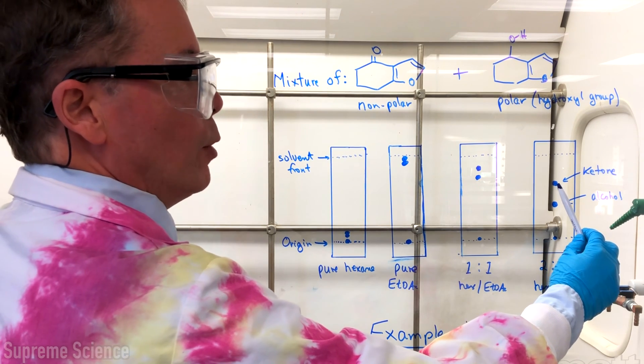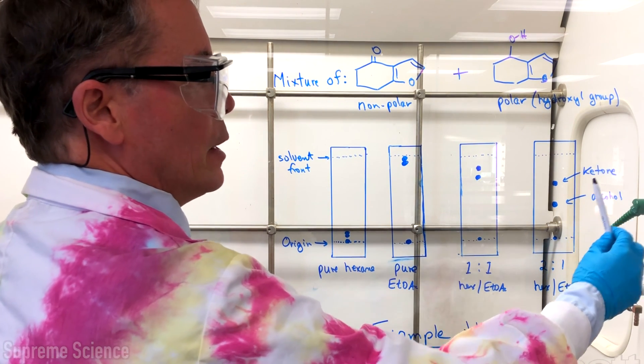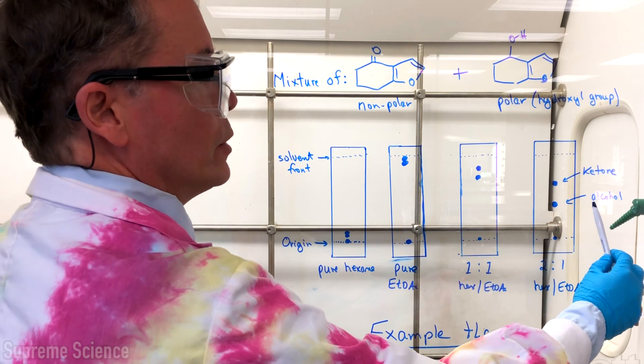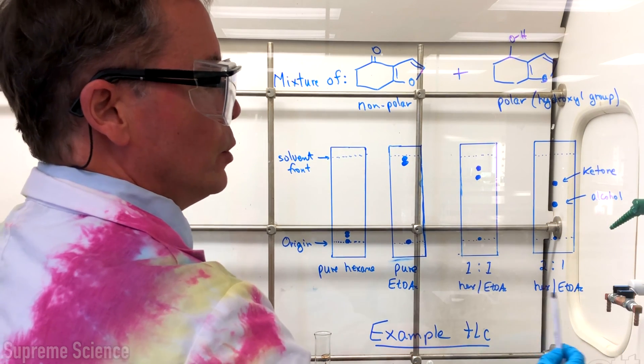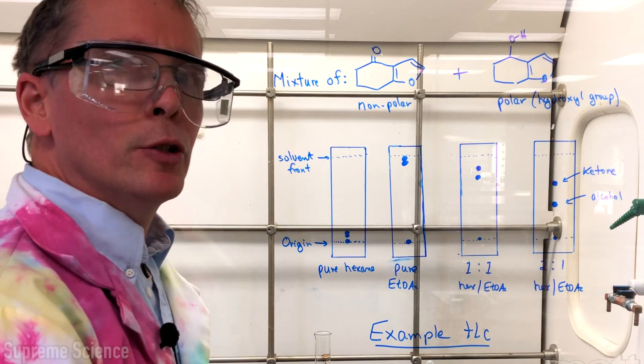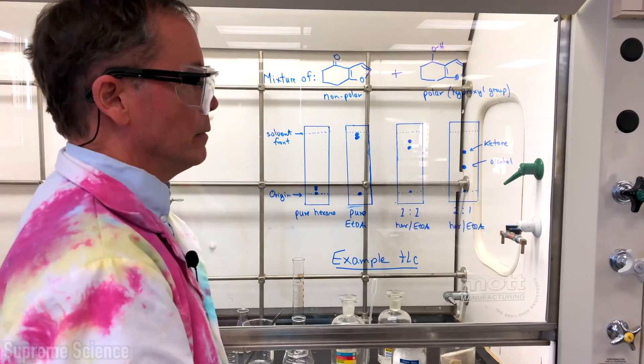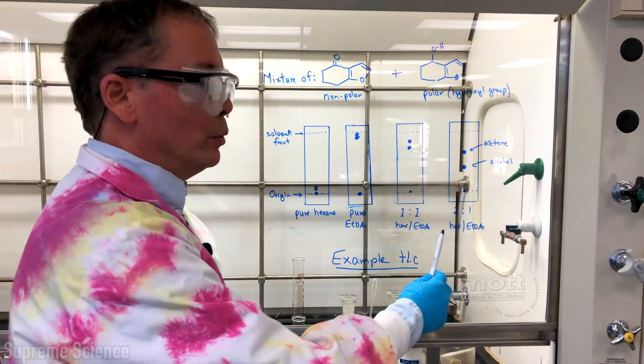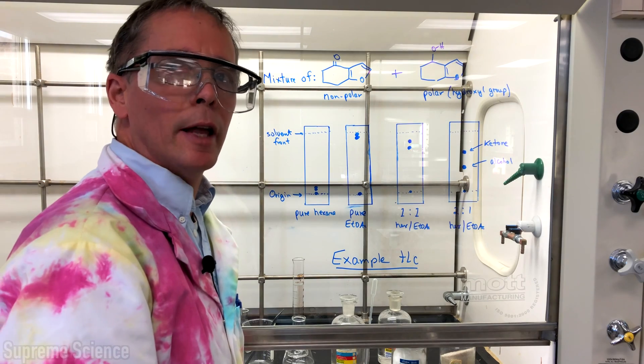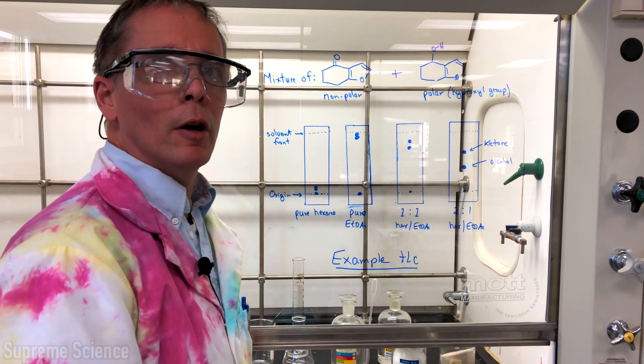The top spot is the non-polar spot which is the ketone. The lower spot is the more polar spot which is the alcohol and so this two to one mixture would be the ideal mixture to separate these two materials. And so for our column we will use this two to one mixture of hexane and ethyl acetate to separate our materials on the column.